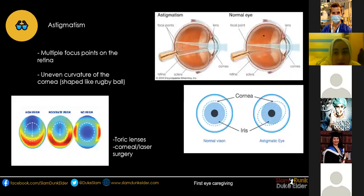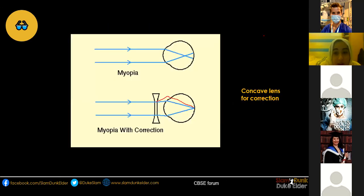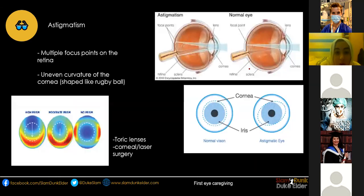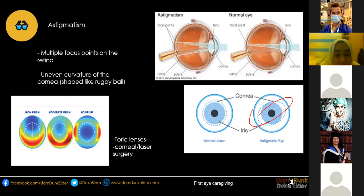With astigmatism there is an irregular curvature to the cornea — instead of being nicely spherical, the cornea is more rugby ball shaped. This causes multiple focus points on the retina, with light rays bouncing around giving a blurry, unfocused image. This can be treated with toric lenses, which are thicker in some parts and thinner in others. Depending on the patient's cornea, the appropriate toric lens causes light to be refracted accordingly. Corneal and laser surgery are also available as treatments.